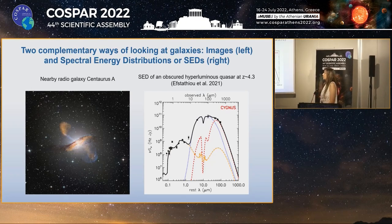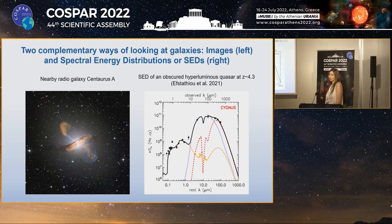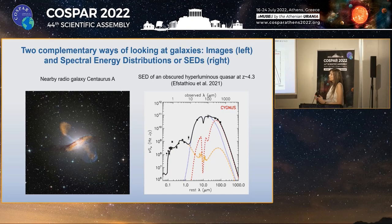I begin with some background information. There are two complementary ways of looking at galaxies: images from telescopes and spectral energy distributions. On the left, we have an image of the nearby radio galaxy Centaurus A, and at the center of this galaxy we can see the AGN. But for objects at high redshift, we cannot see anything from the images, and this is the case where we rely on spectral energy distributions to uncover AGN.